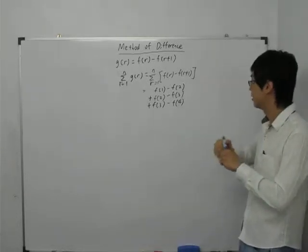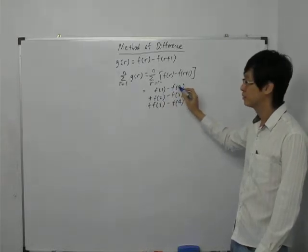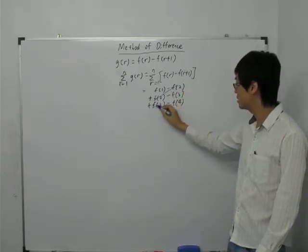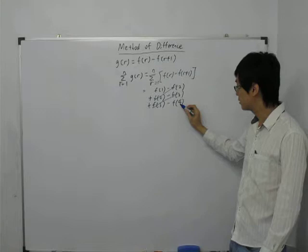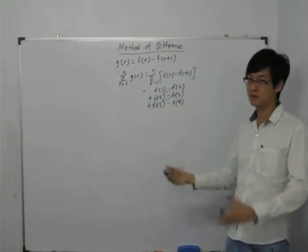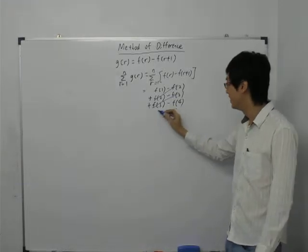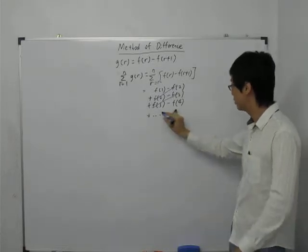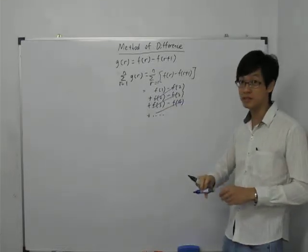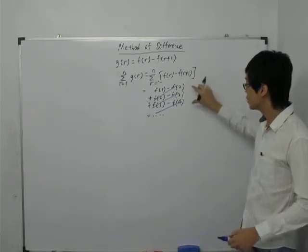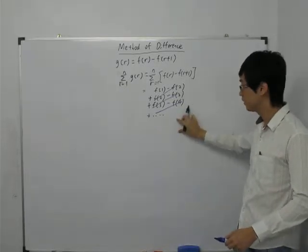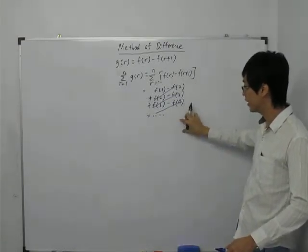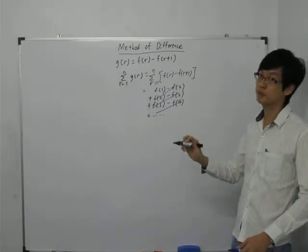Right? That's why it's called method of difference. This term cancels with this term. This term cancels with this term, the one below this term. If not, it won't be a complete reflection. So what I do is simply just put plus dot dot dot here. And this term will cancel with this term, the one below this. So you just write the first 3 rows, followed by the last 2 rows. I repeat again, you write the first 3 rows, followed by the last 2 rows. In the middle you just put plus, dot dot dot.